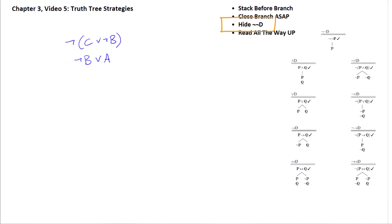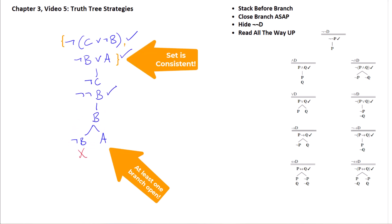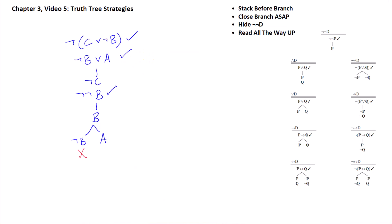Here's a quick example of hiding your double negation decomposition. If we're going to do the tree for these two formulas, we stack before we branch. That negated disjunction is going to stack to not-C and — since the right disjunct already has a negation on it — we'd normally add another negation to get not-not-B, then decompose the double negation to B. We then decompose the disjunction into not-B on one side and A on the other, and that branch closes because of the B / not-B contradiction.